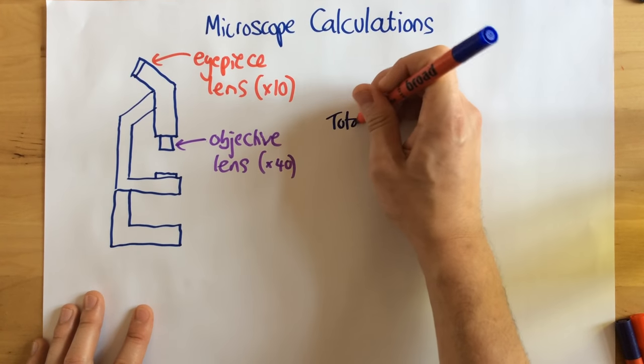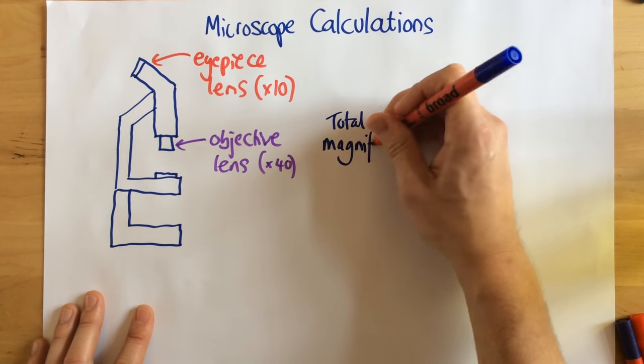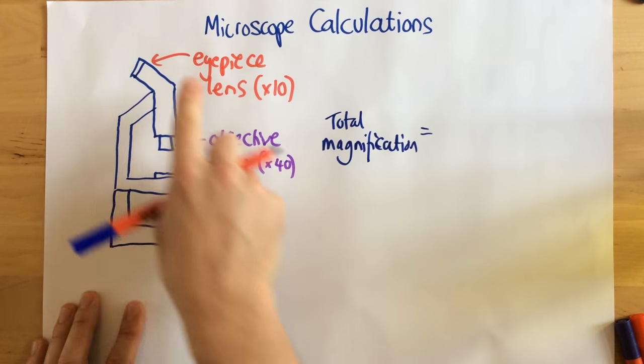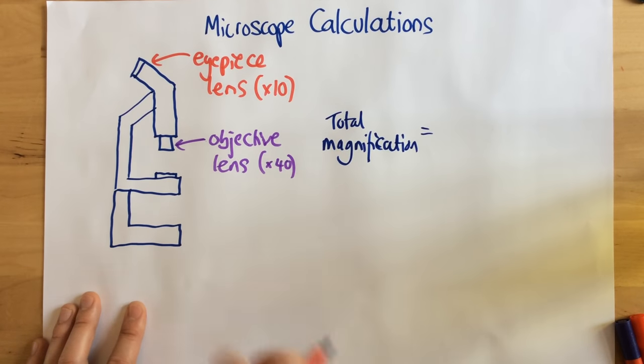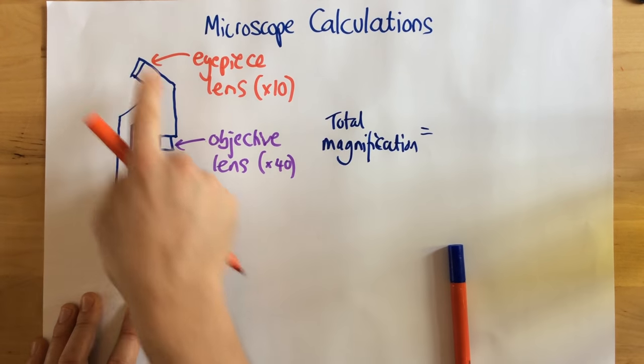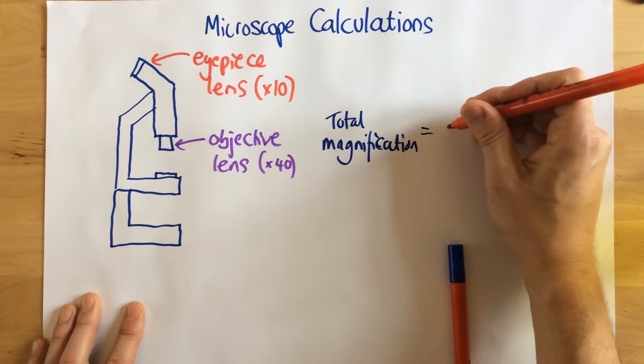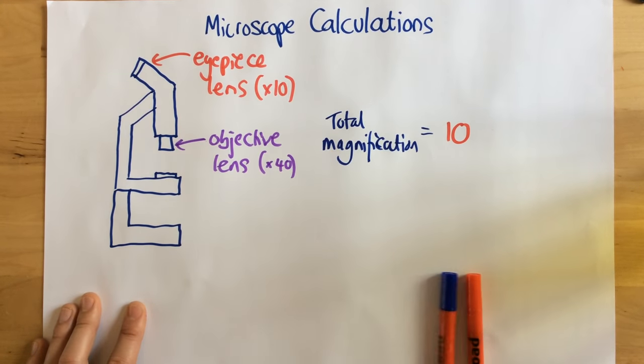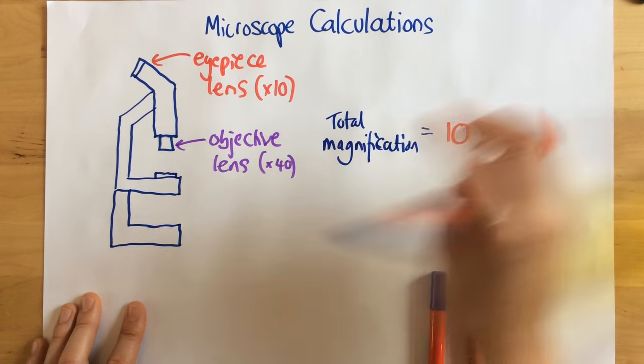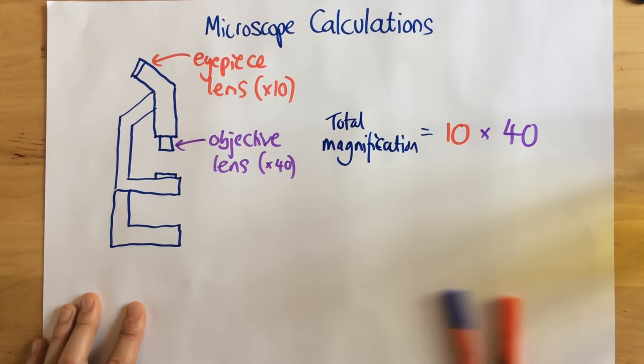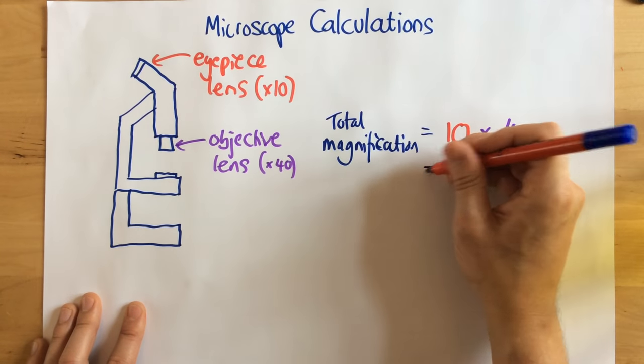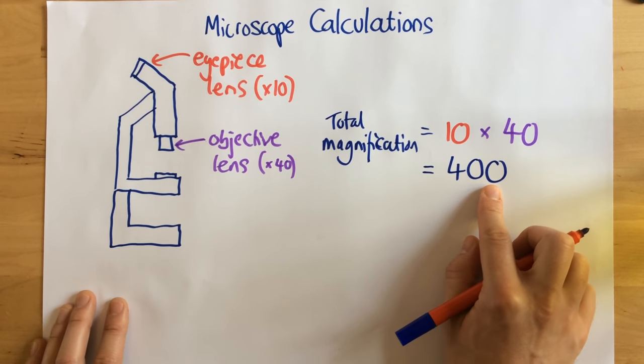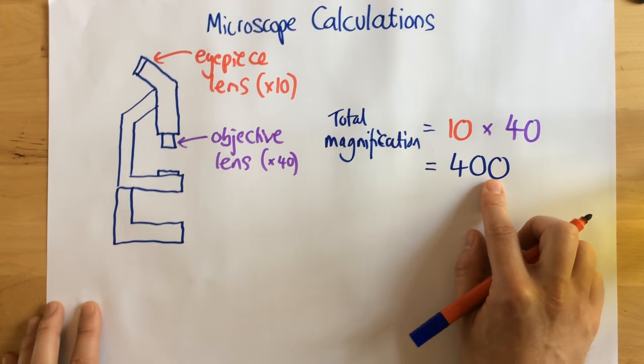To find the total magnification, all that we need to do is multiply the two different lenses together. So the magnification strength of the two different lenses. So for this particular example of this microscope, I just need to take my magnification of my eyepiece lens, multiply it by the magnification of the objective lens. And nice and simply, that is going to say that this microscope now is going to have a magnification of 400. So it means that image was going to appear 400 times bigger.